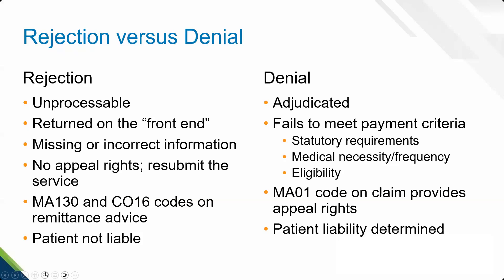If a claim is rejected, it is deemed as unprocessable, and this means the claim is returned on the front end — it's never adjudicated. Services or supplies can be rejected because there is invalid, missing, or incorrect information or something that simply doesn't make sense. For rejected claims, there are no appeal rights. What you need to do is fix it and resubmit. When you receive the remittance advice for a rejection, there will be an MA130 and CO16 code on that remittance advice.